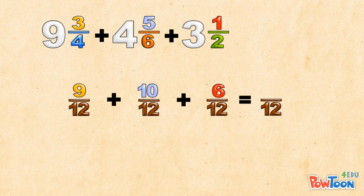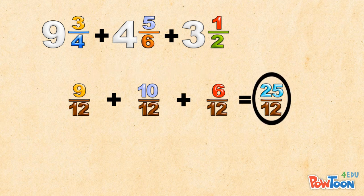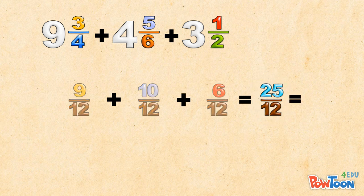Now we add the numerators. 9 plus 10 is 19, plus 6, that's 25 over 12. It's an improper fraction. We have to make a mixed number. You know the routine. How many 12s in 25? 2 times 12 is 24, so there's 2 whole ones here and a remainder of 1. Put in the denominator of 12.